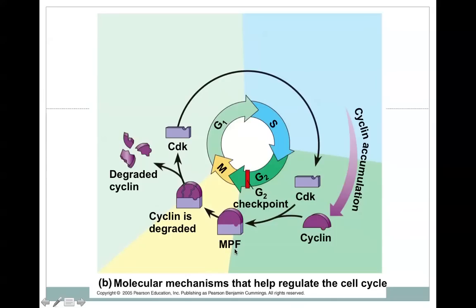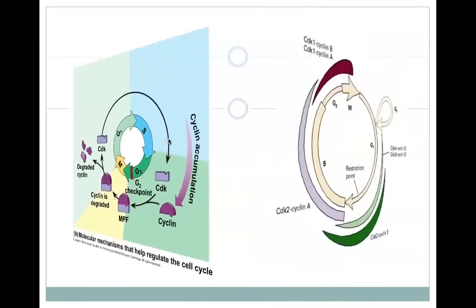And this is the original name before the CDK and cyclin components were purified and identified. It was called mitosis promoting factor because they knew if they added this to a cell, it would immediately go into mitosis. So this is the active form, and then after that checkpoint is passed, the cyclin is broken down, and the CDK returns to its inactive state.